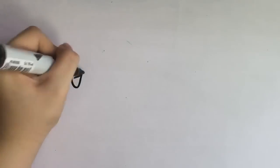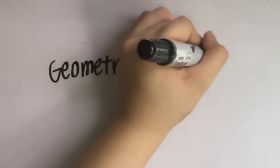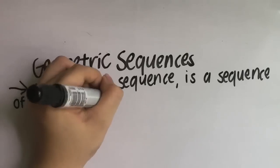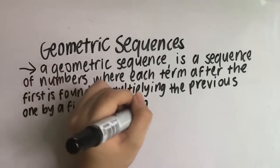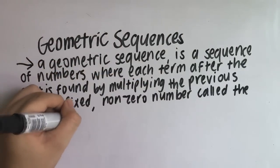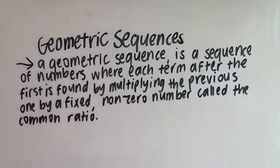So what are geometric sequences? A geometric sequence is a sequence of numbers where each term after the first is found by multiplying the previous one by a fixed non-zero number called the common ratio.